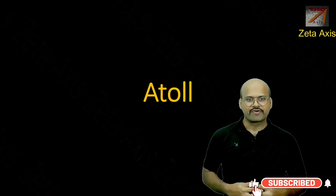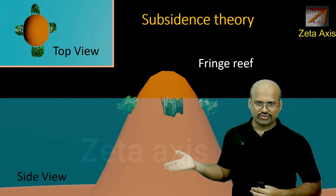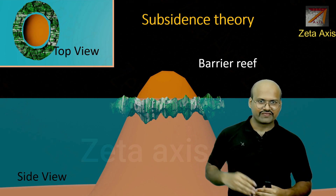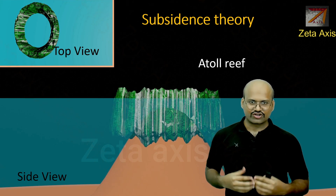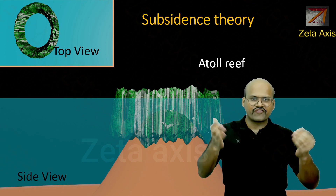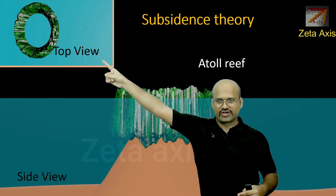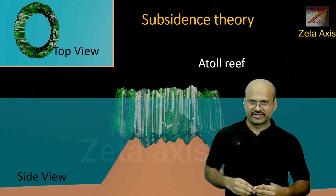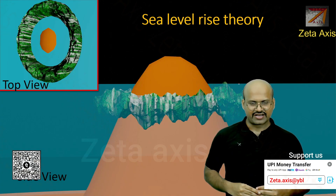Now let's see the third type: the atoll. There are two main theories for atoll formation. In the first, a reef starts as a fringe reef around a mountain, then develops into a barrier reef. Due to erosion or tectonic movement, the mountain begins to subside, while the corals develop upward to survive. This forms an atoll — seen from the top view as a big lagoon with a rim of coral reef surrounding where the mountain has sunk below the sea surface.